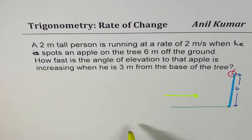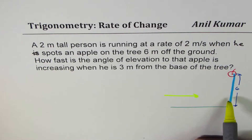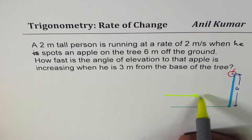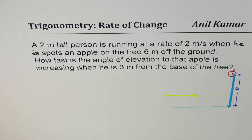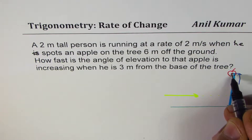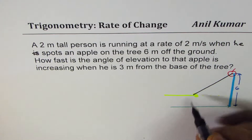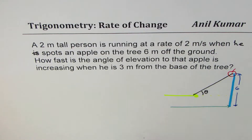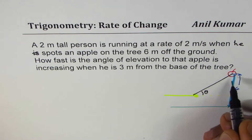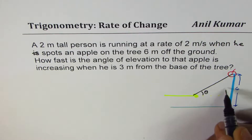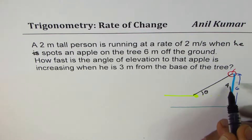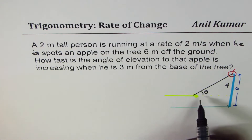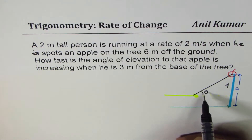A 2-meter tall person is running. The height of the apple is 6 meters off the ground. What you observe is that this height remains constant. However, the angle of elevation changes. If I connect these two points, the angle of elevation theta will be this angle. The height of the apple above the eye level will be 4, correct? So as the person runs, this angle changes.